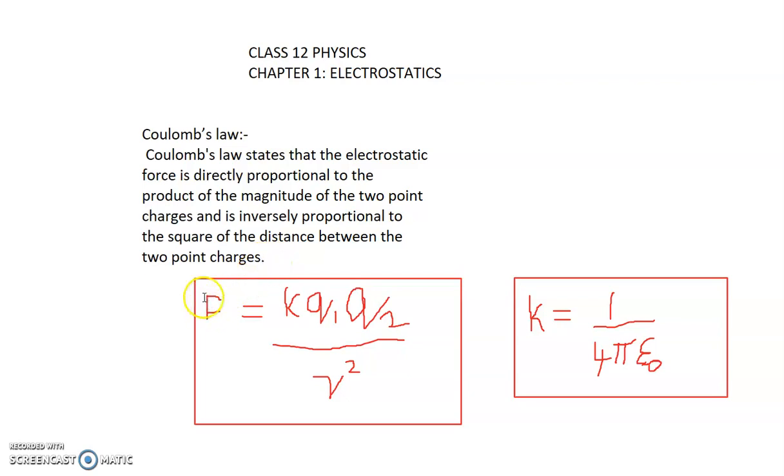Mathematically, it is expressed as F equals K times Q1 Q2 divided by r squared. Here, Q1 and Q2 are the two point charges and K is the constant.